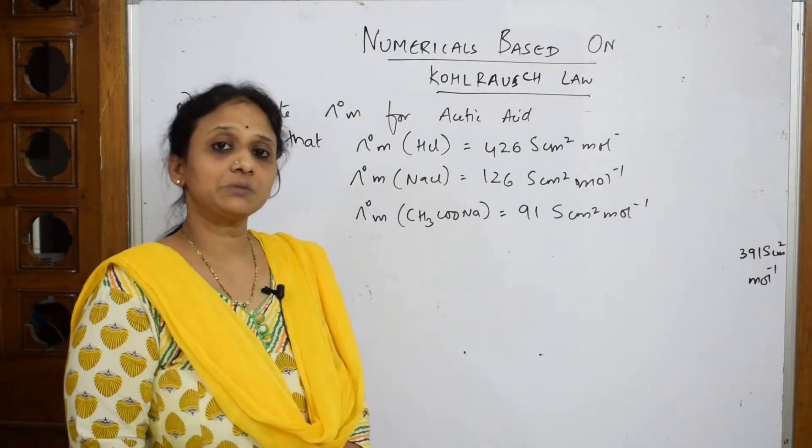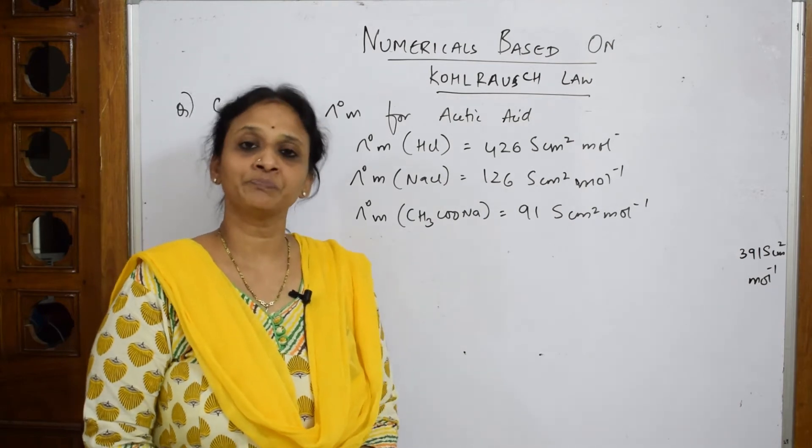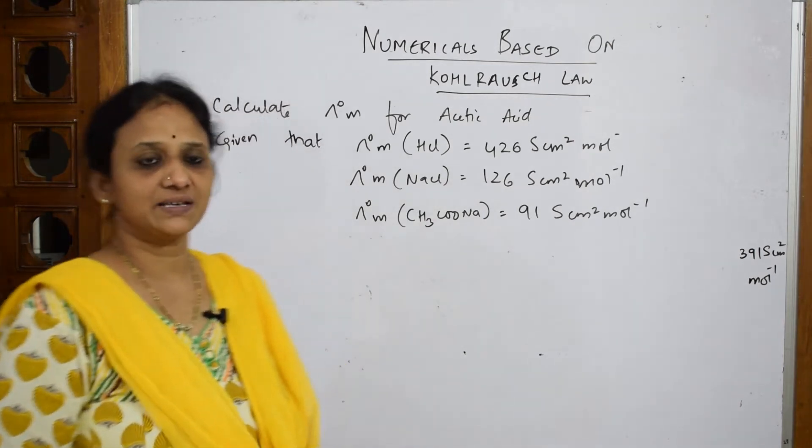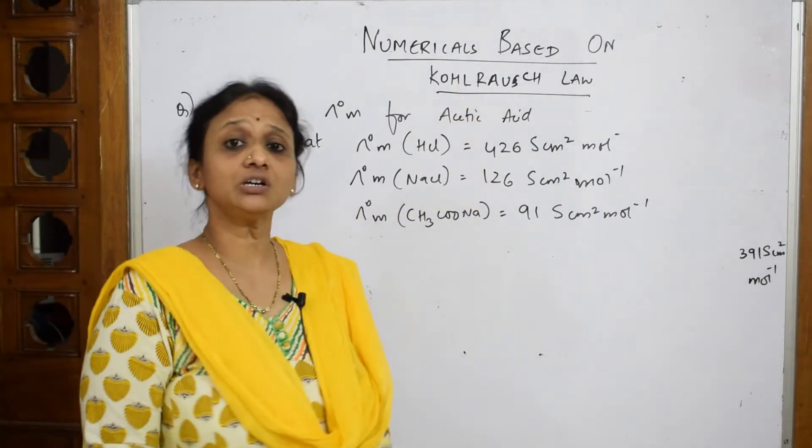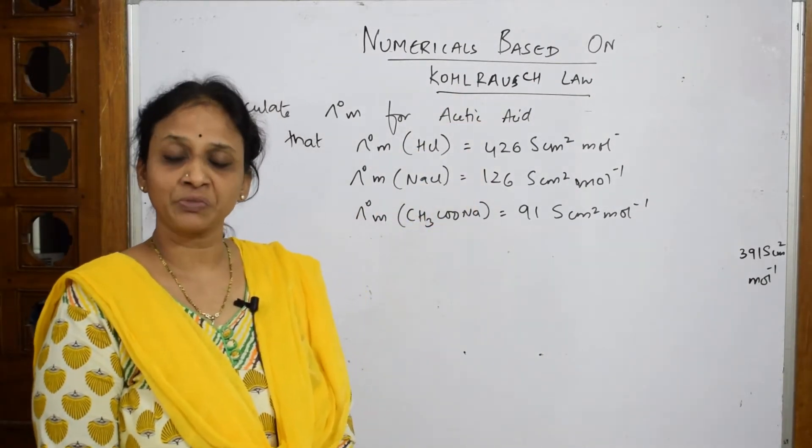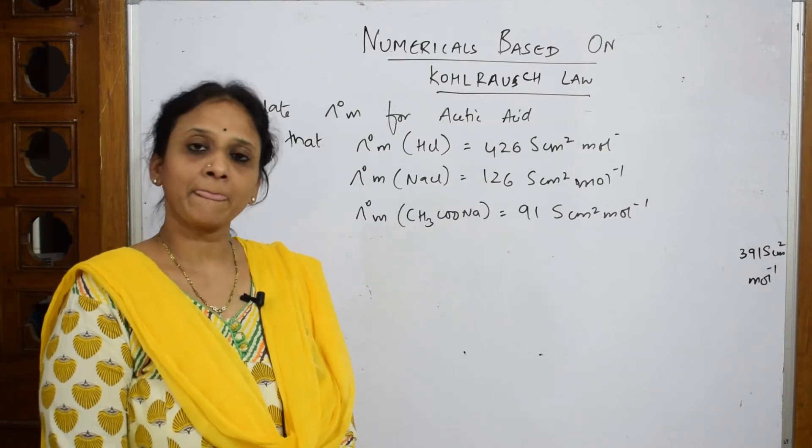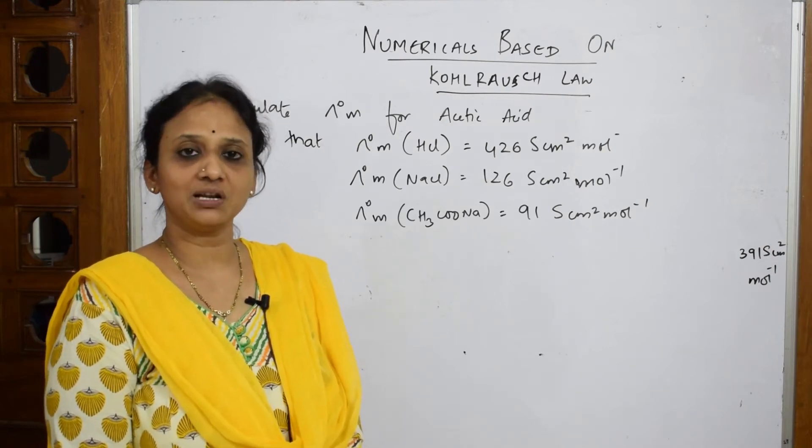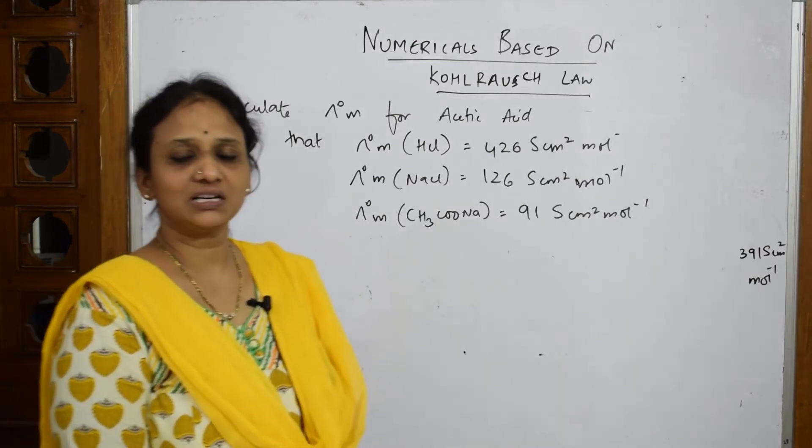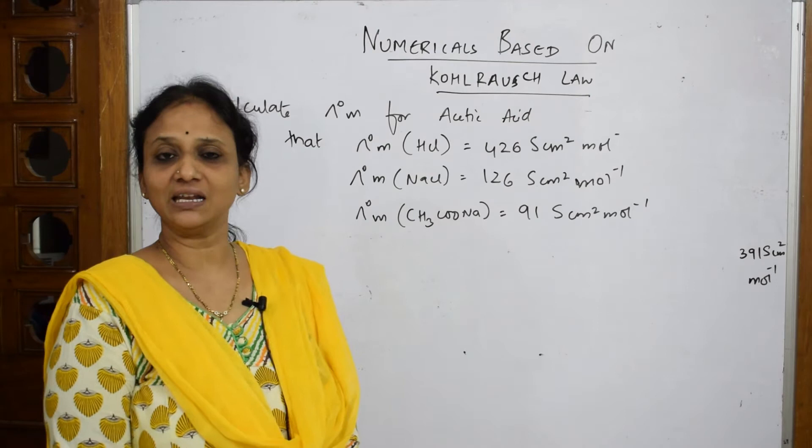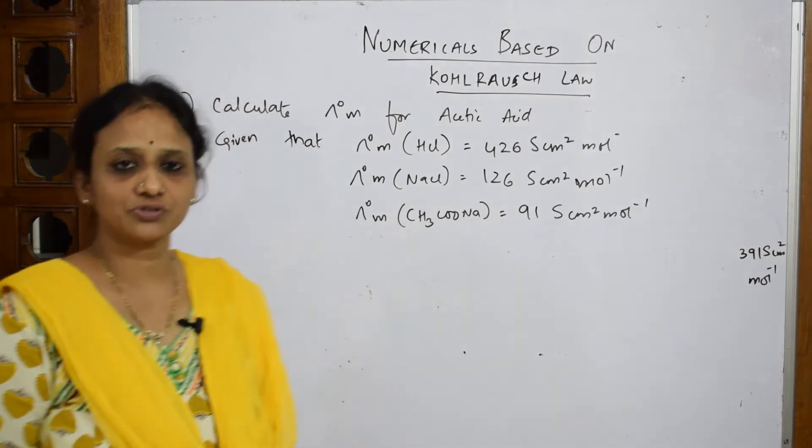Now whenever we speak about Kohlrausch law, basically this type of examples and questions are quite common. Let's read the question how to solve it, step by step. First remember whenever you are doing Kohlrausch law numericals, go back to the concept first which is already there in the playlist. After learning the concept and the formulas and units, then come back to this numerical. Otherwise you will not understand. Never try to memorize a formula. First understand how I got the formula, then come back to this. It will be easy for you to solve.